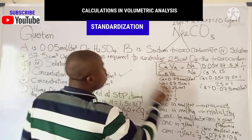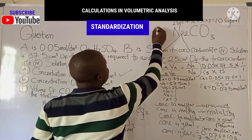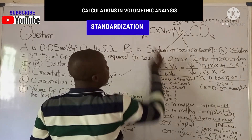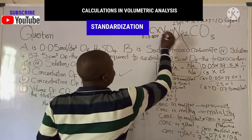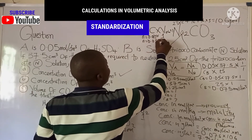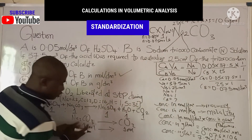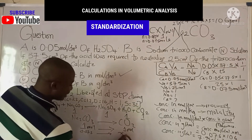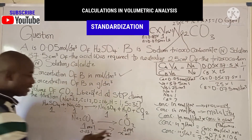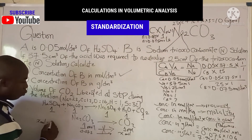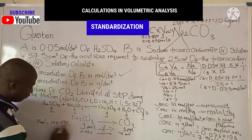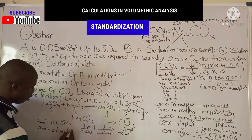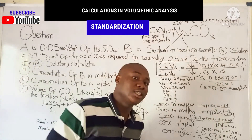We calculate the number of moles of Na₂CO₃ using: moles = concentration × volume. The concentration is 0.075 mol/dm³ and the volume of the standard solution is 1 dm³, so moles of Na₂CO₃ equals 0.075 moles. Since the mole ratio is 1:1, moles of CO₂ also equals 0.075 moles.